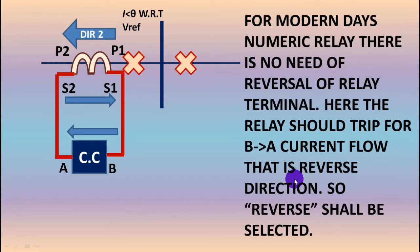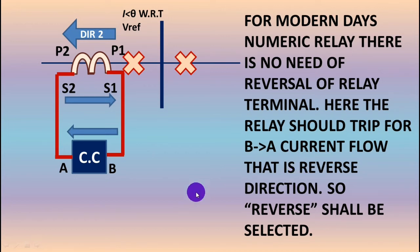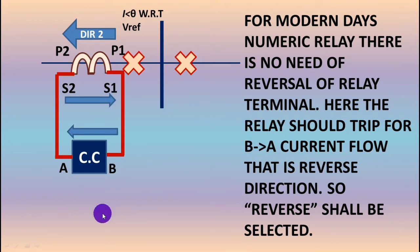For modern numeric relays there is no need to reverse the relay terminals. This relay should trip for B-to-A current flow — that is, the reverse direction has to be selected. For modern numerical directional relays there is a selection for forward tripping or reverse tripping. If you set reverse tripping it will trip for current flowing from B to A; if you select forward tripping it will trip for current flowing from A to B. For this particular case we have to select the reverse setting.